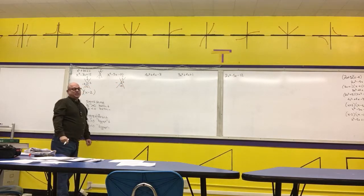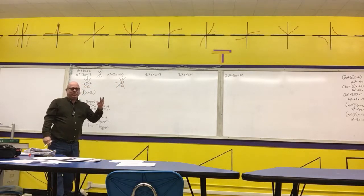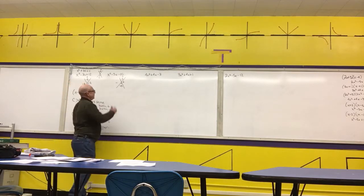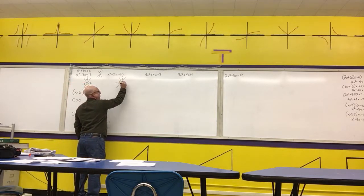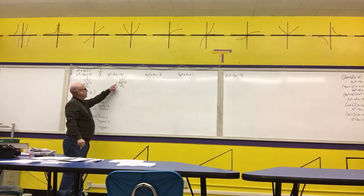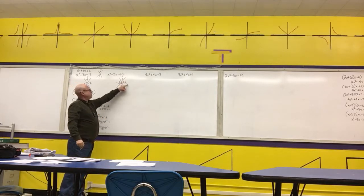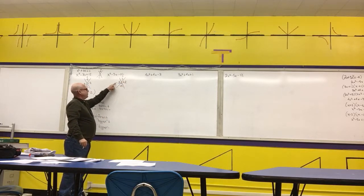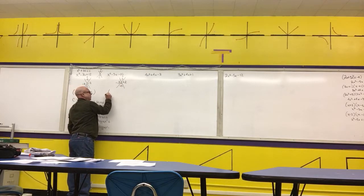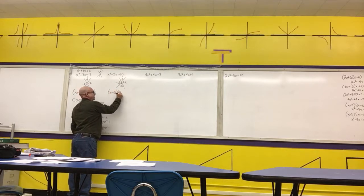We only have two choices: 1 and 10, or 2 and 5. The biggest one has to be 5. Let's check: negative 5 times 2 is negative 10, and negative 5 plus 2 is negative 3. So we write x minus 5 times x plus 2.